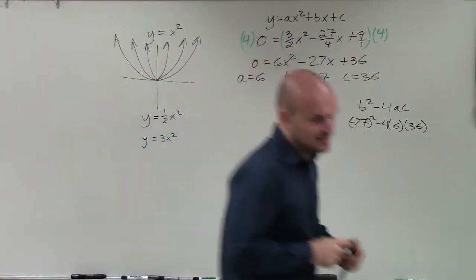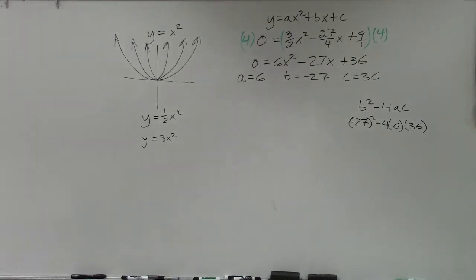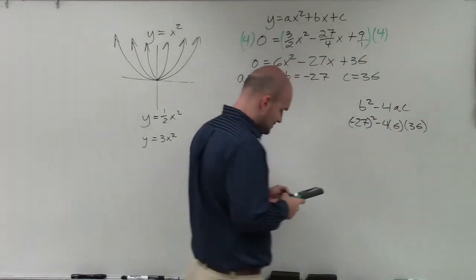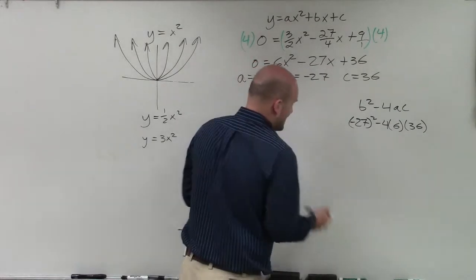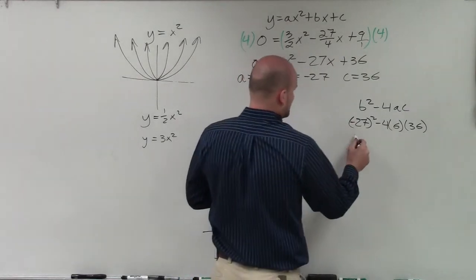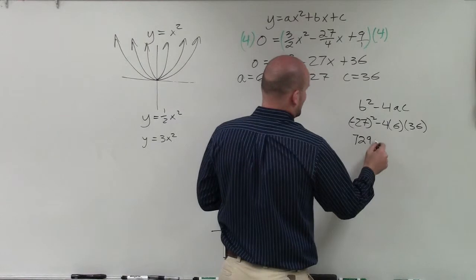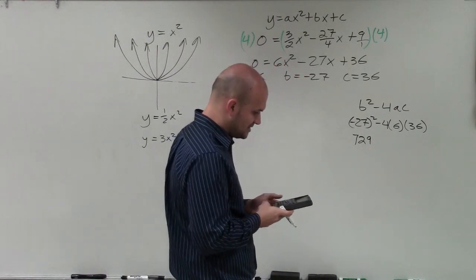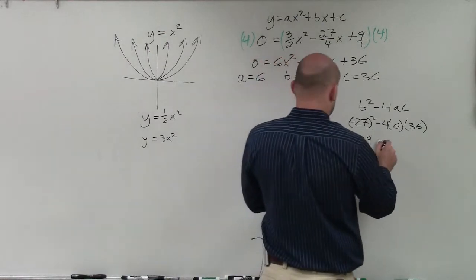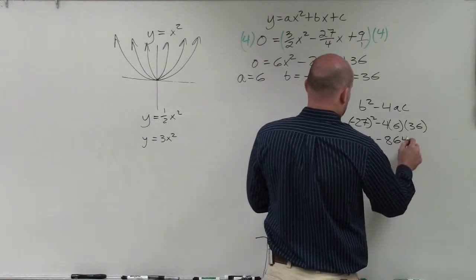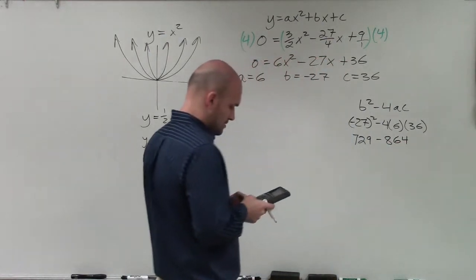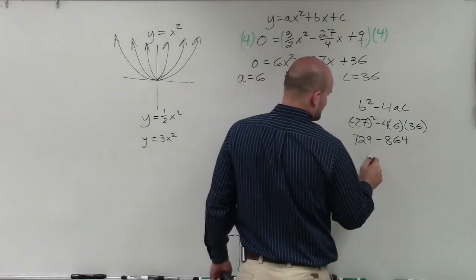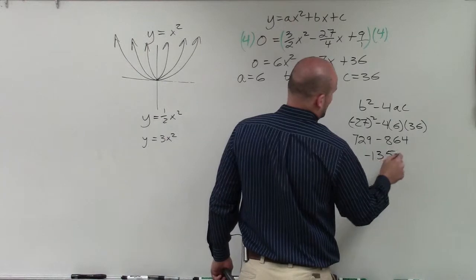And then I grab my nice little handy dandy calculator, all right? And so I do 27 squared, or negative 27 squared, but it doesn't matter. It's still going to be positive, is 729. And then I do 4 times 6 times 36 is 864. So then I subtract those two, which I probably could have done in my head, which is negative 135.